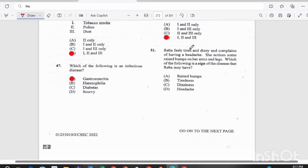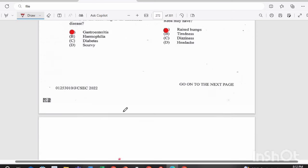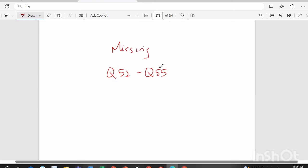Question 51. Reba feels tired and dizzy and complains of having a headache. She notices some raised bumps on her arms and legs. Which of the following is a sign of the disease that Reba may have? And the keyword there is sign, meaning something that can be seen on the outside of the person's body and not what is just being felt. So in this case, A, the raised bumps would be the sign. Tiredness, dizziness, and headache would be symptoms. What she can feel but other persons can't see.